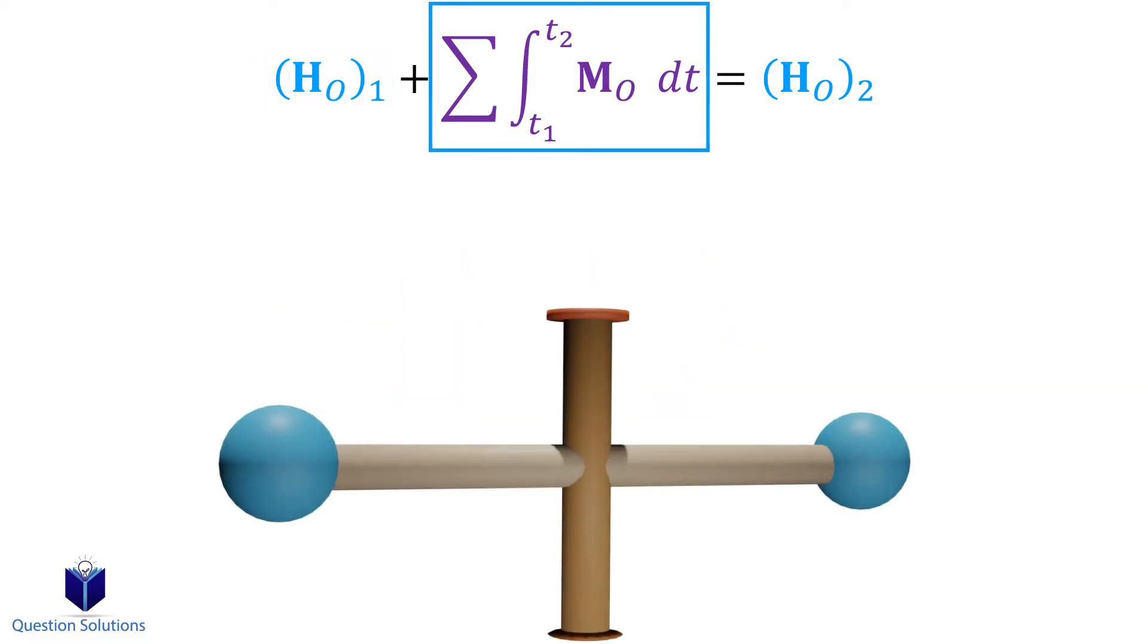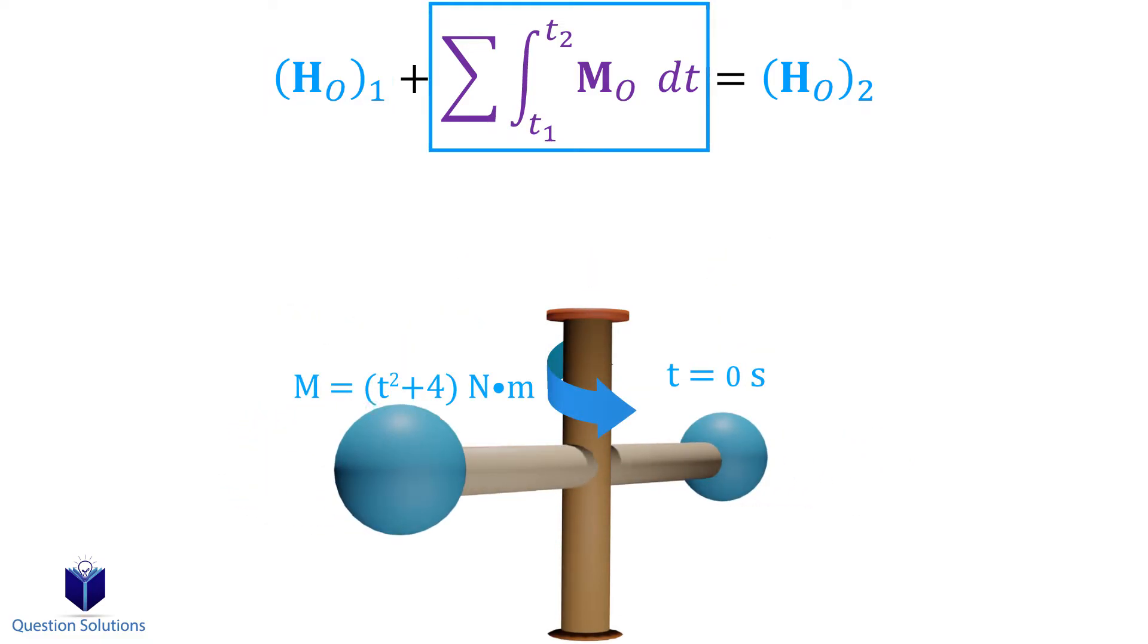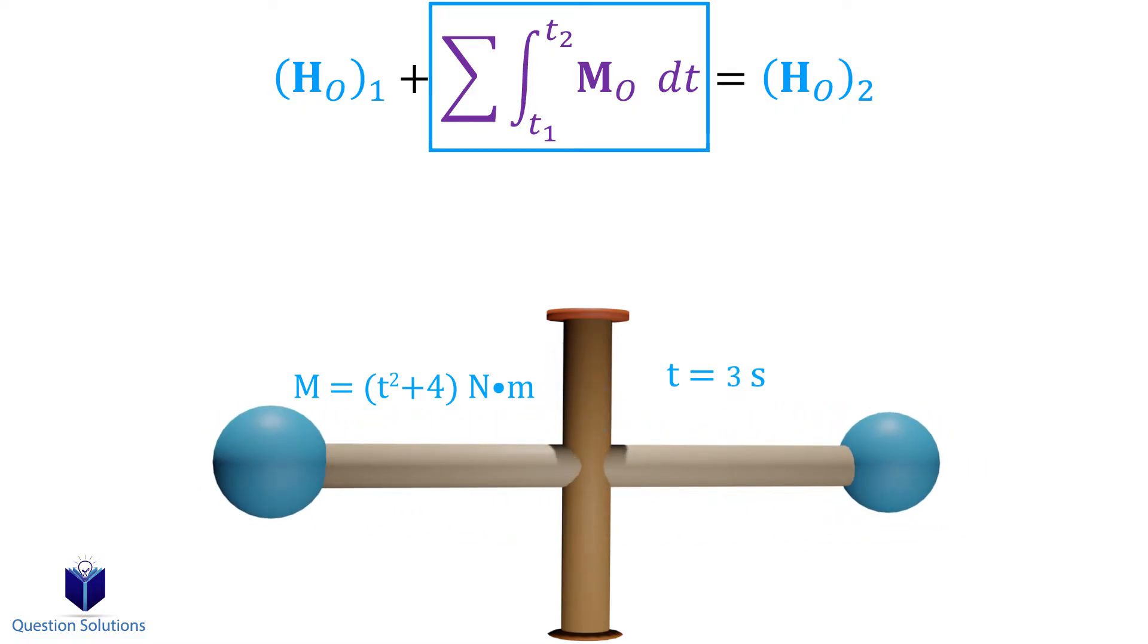Angular impulse is the moment about the axis for a duration of time. So let's say we have a moment represented by this equation applied to the z axis from 0 seconds to 3 seconds. Then we take the integral to find the angular impulse. All of this will make more sense with examples, so let's get started.